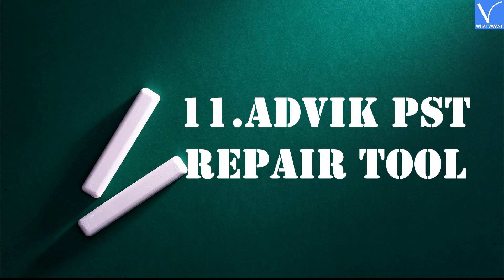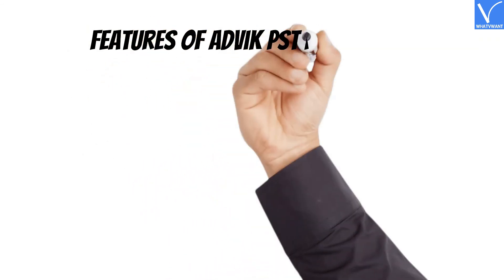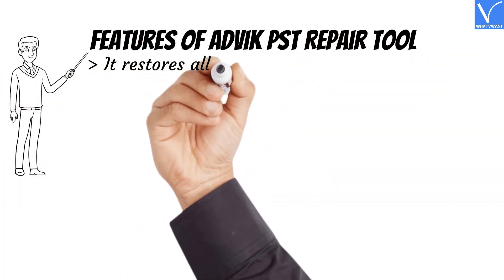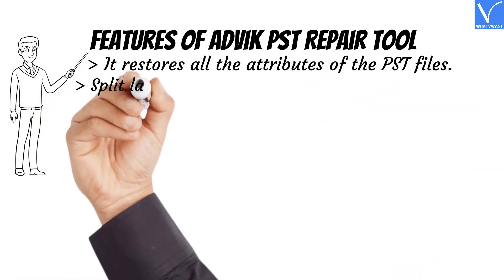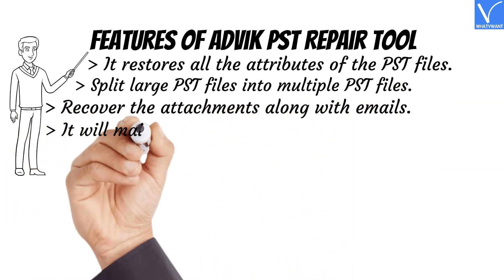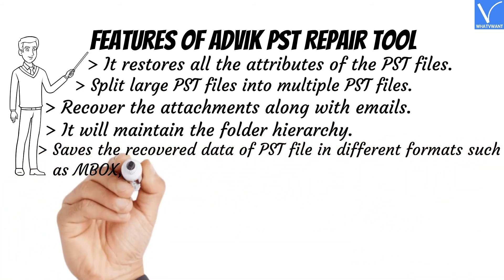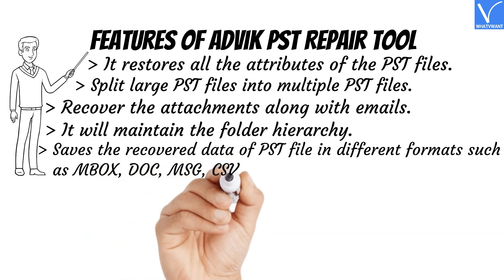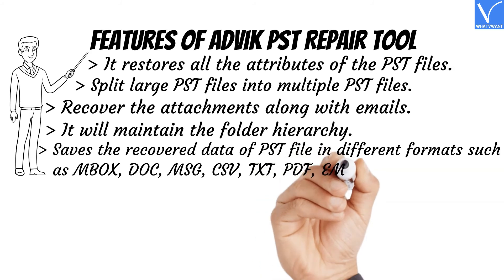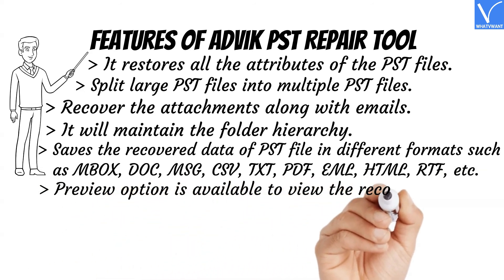Number 11: ADVOC PST Repair Tool. ADVOC PST Repair Tool is used to repair corrupted or damaged PST files. It uses sophisticated technology to repair and recover corrupted and damaged PST files. Features: It restores all the attributes of PST files. Splits large PST files into multiple PST files. Recovers attachments along with emails. Maintains folder hierarchy. Saves recovered PST data in different formats such as MBOX, DOC, MSG, CSV, TXT, PDF, EML, HTML, RTF, etc. Preview option is available to view recovered PST data items.